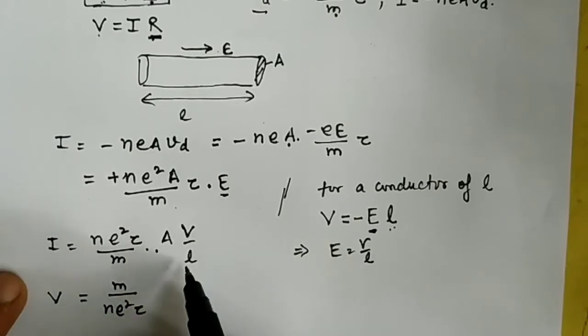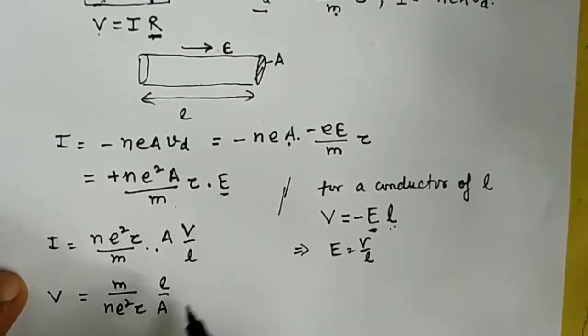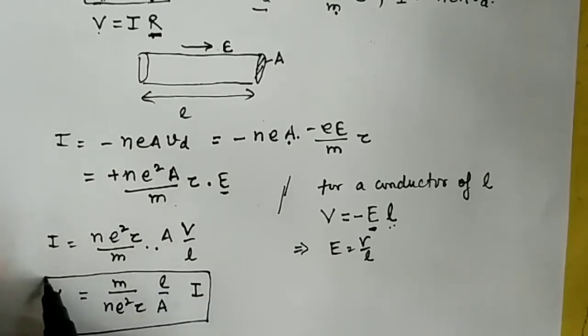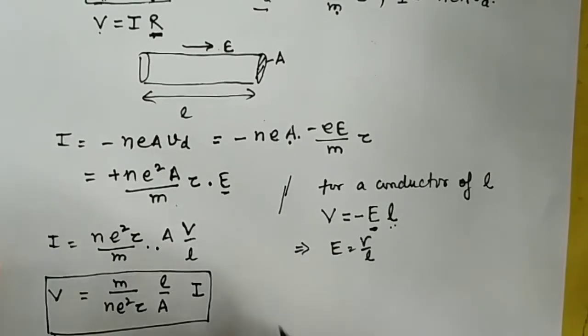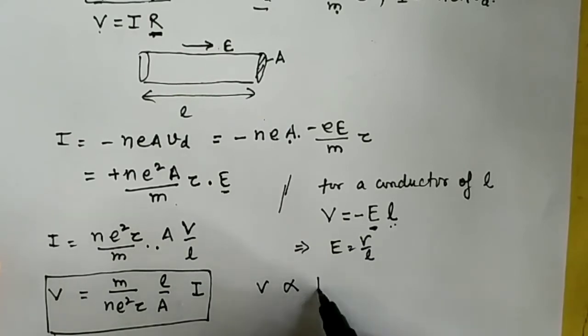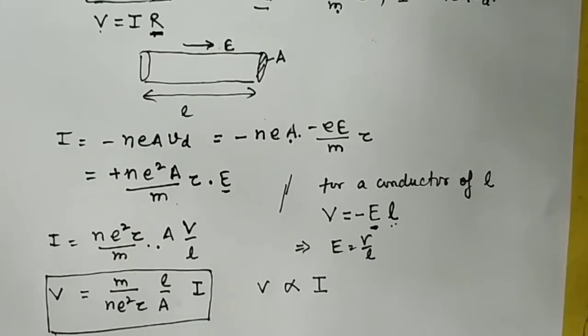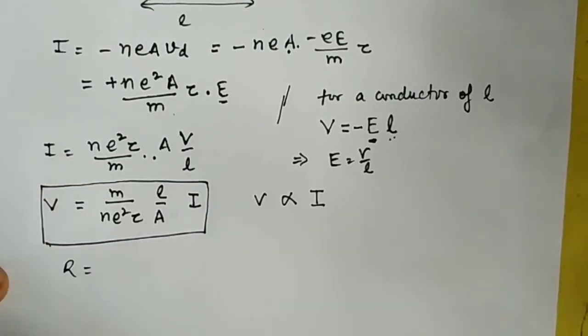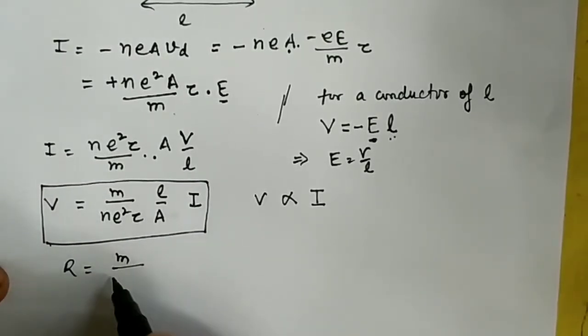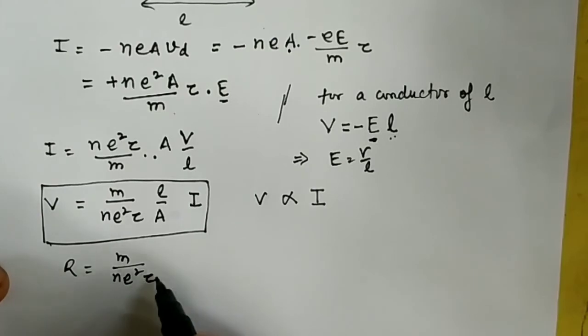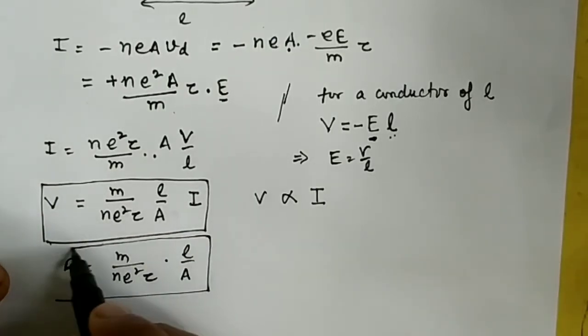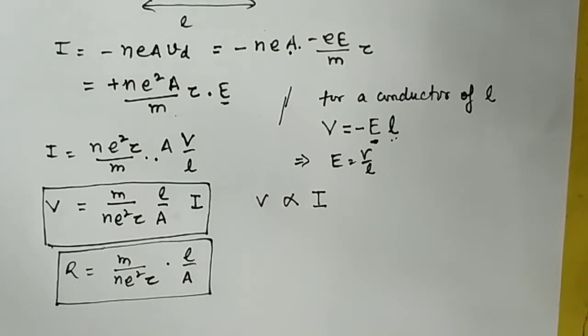So this is Ohm's law: V is directly proportional to I, where the resistance R equals m divided by n e squared tau times l by A. This is our resistance formula.